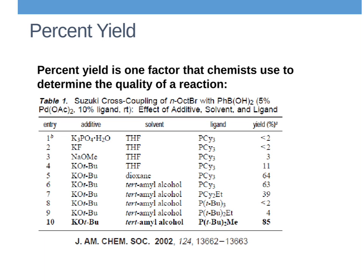Percent yield is just one of the many factors that chemists use to determine the quality of a reaction. If we're doing a reaction, we're trying to make something - a certain material, a medicine, or discover a new reaction type. There are many ways to determine the quality of that reaction.